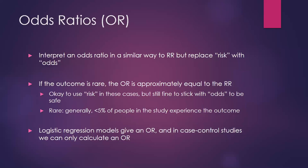Underlying that single word difference is an important distinction: if the outcome is common in the population — such as diabetes, obesity, or physical inactivity, which affect more than five percent of most populations — the odds ratio is no longer going to be similar to the relative risk. So it's important to consider that when interpreting results, because a higher odds ratio doesn't necessarily mean the risk is that much higher.